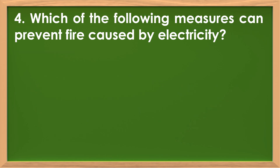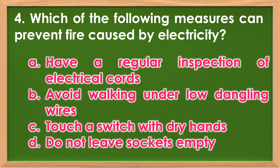Number 4: Which of the following measures can prevent fire caused by electricity? A. Have a regular inspection of electrical cords. B. Avoid walking under low dangling wires. C. Touch a switch with dry hands. D. Do not leave sockets empty. Good job, the answer is letter A.